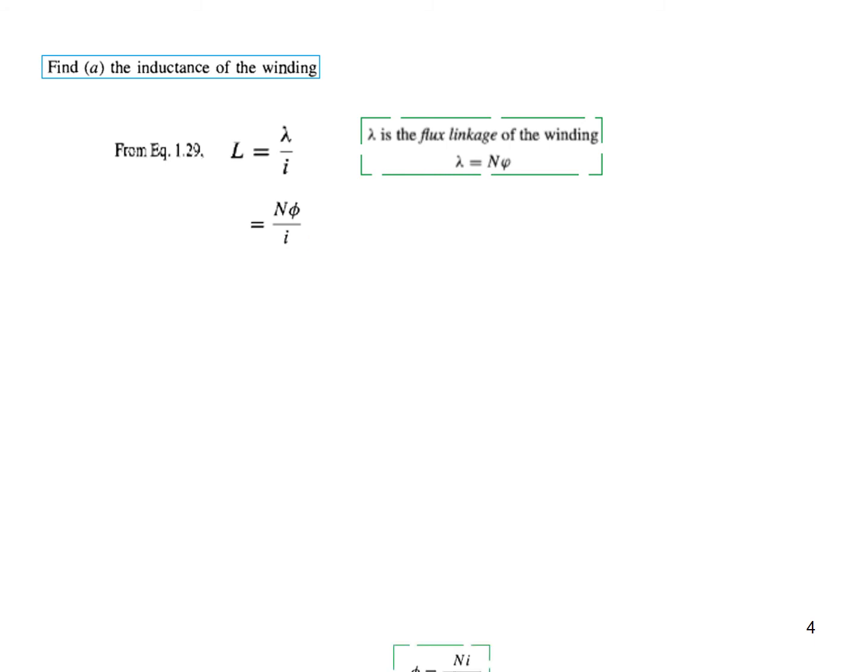And now we know that phi is N*i divided by the equivalent reluctance. So this is how we write phi. And since we need to find phi over i, we bring this i here. So phi over i will be N divided by the equivalent reluctance.